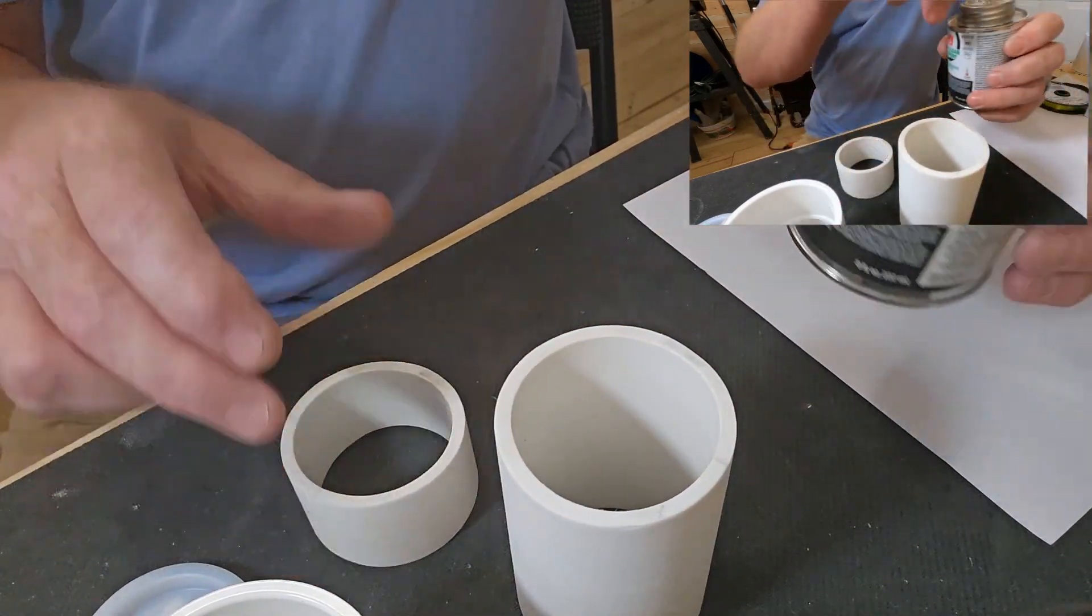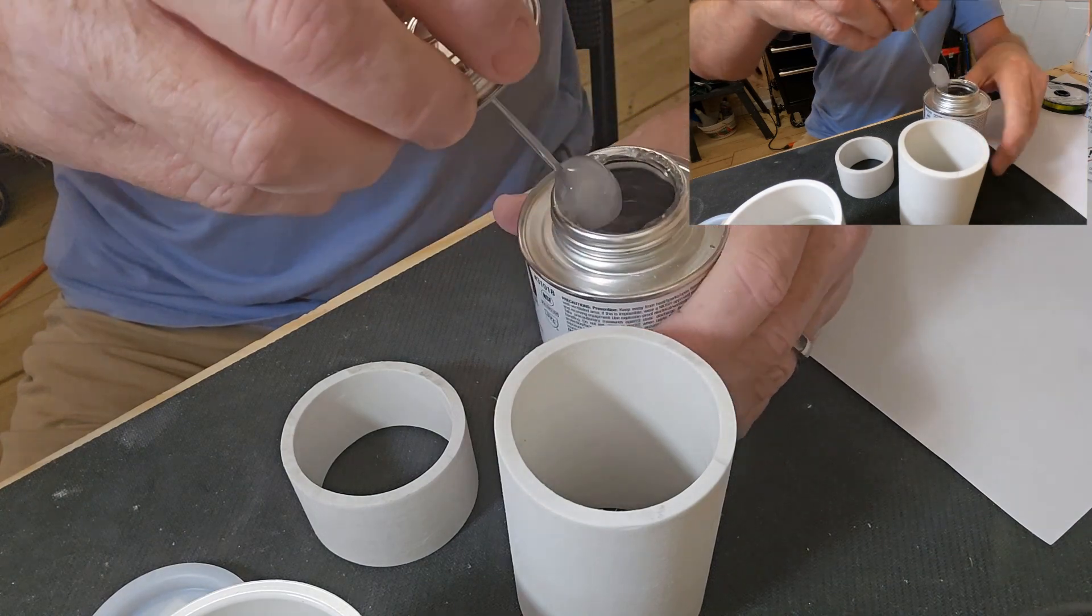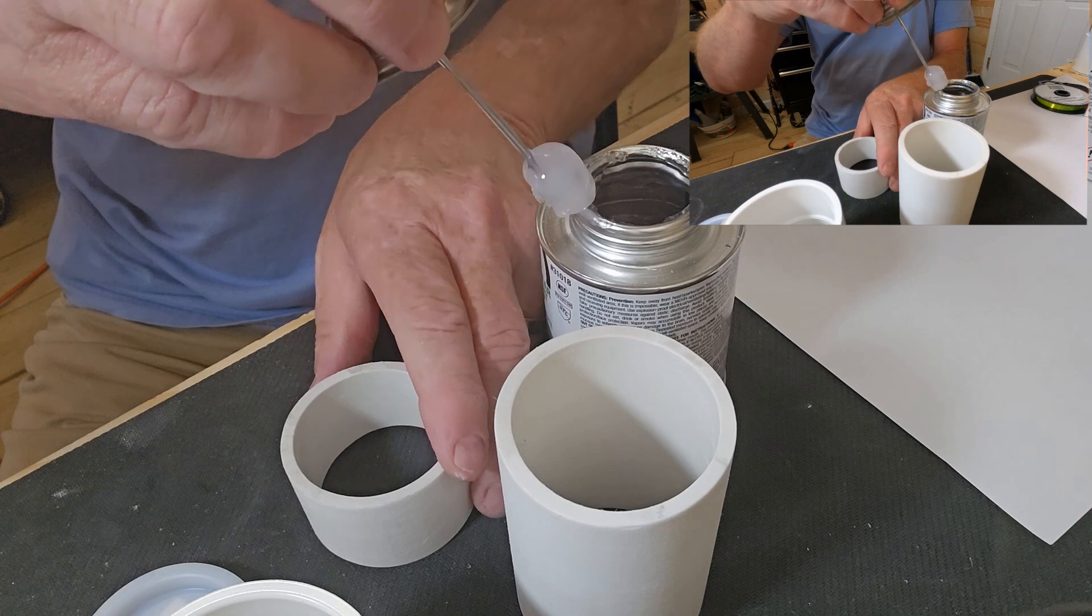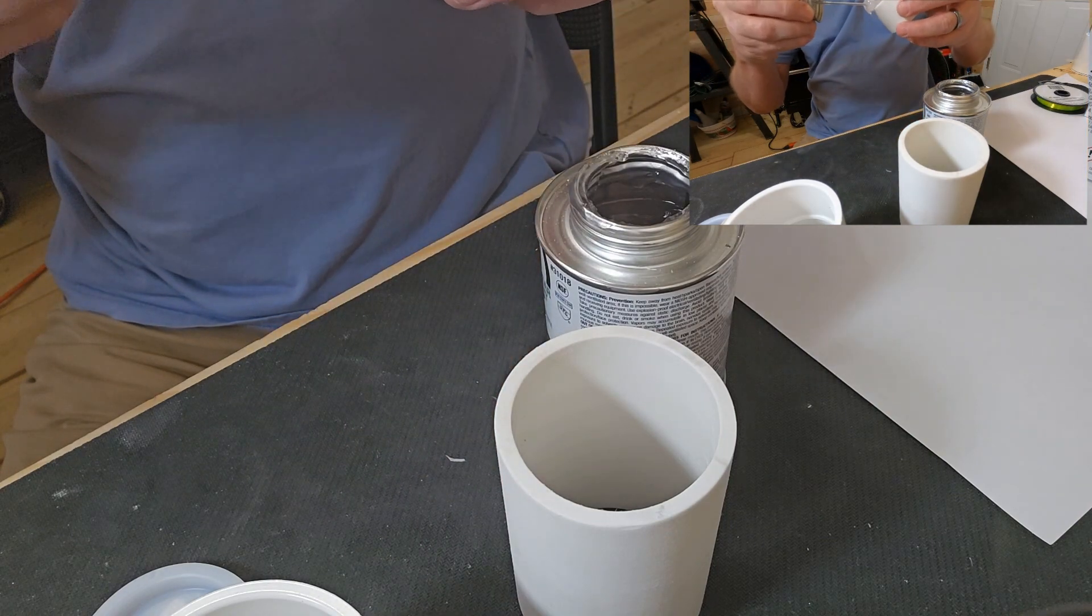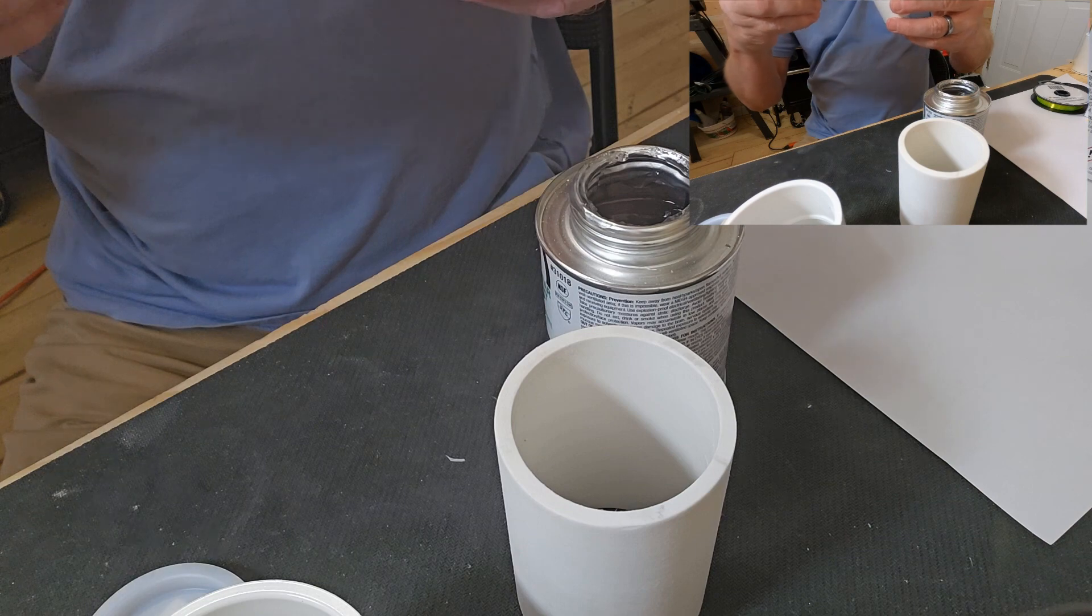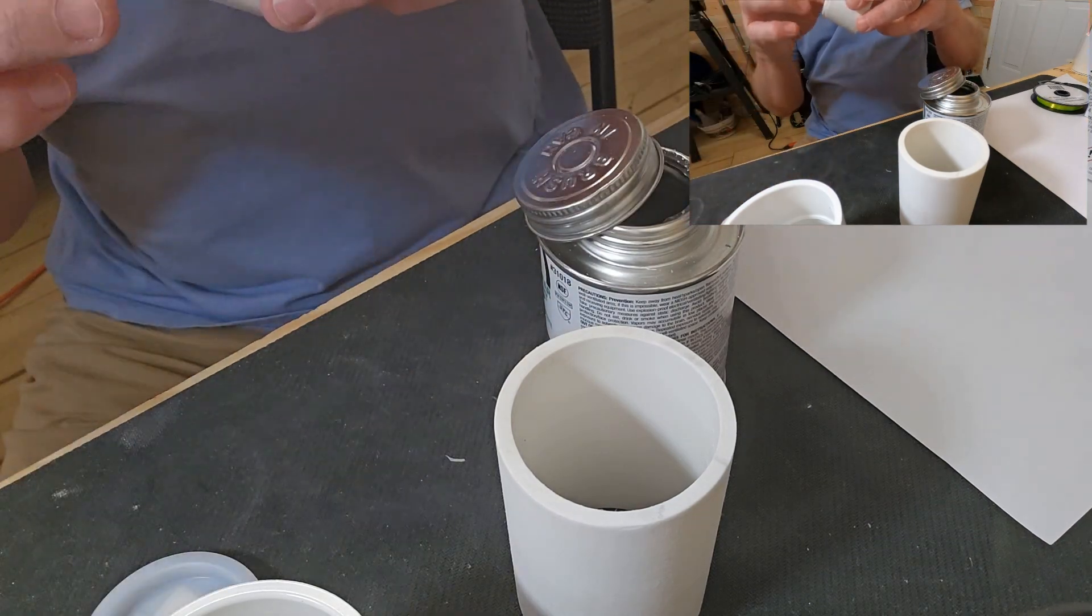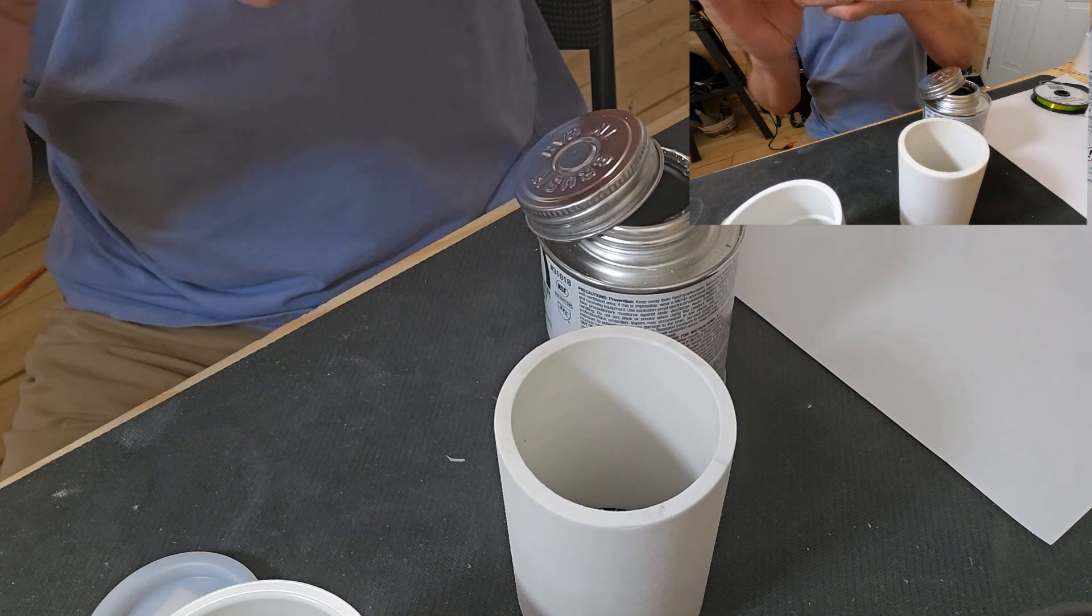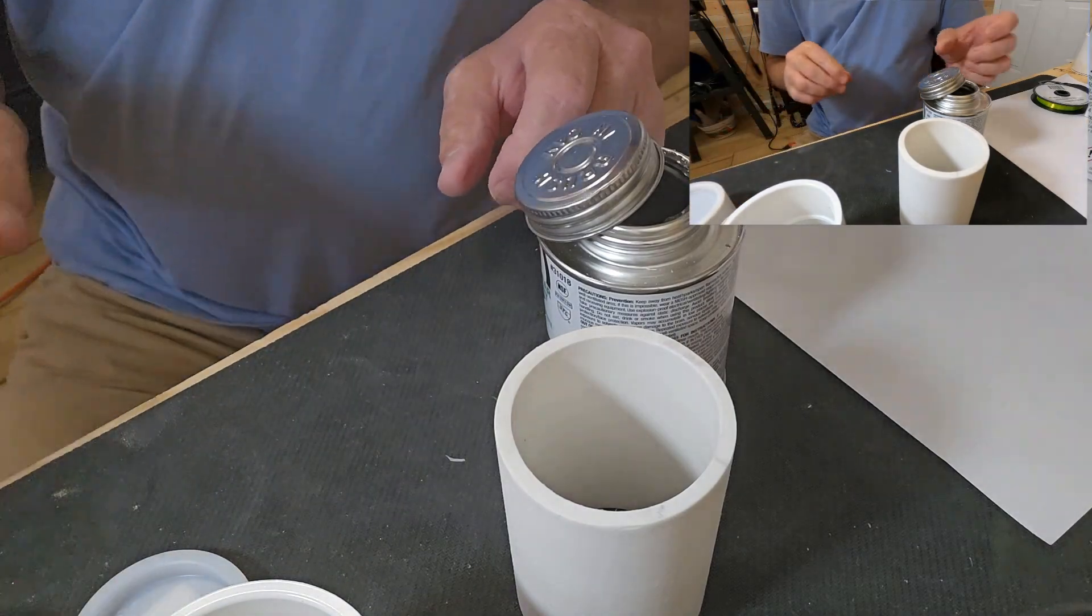I'm going to take my inch and a half piece. I'm going to go ahead and put me some PVC cement around that. I'm going to put one of my end caps in there. I'm going to set that there and let it dry.